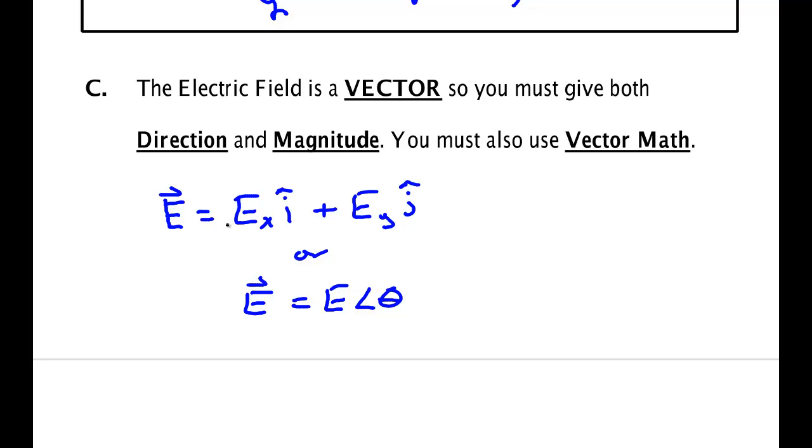Or you might say that that vector had some magnitude at some angle. We've got to use vector math, and this will mean that we'll often be summing up the components of a group of vectors of electric fields to find the total electric field along x and y, and then using trig to find the magnitude of the angle.